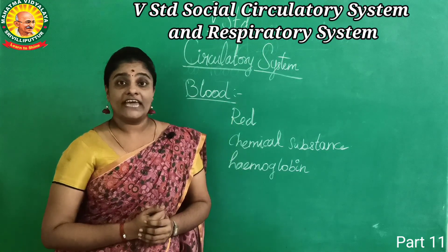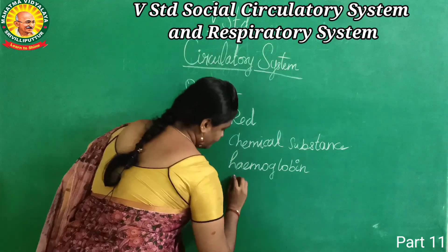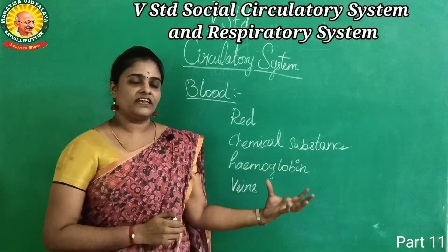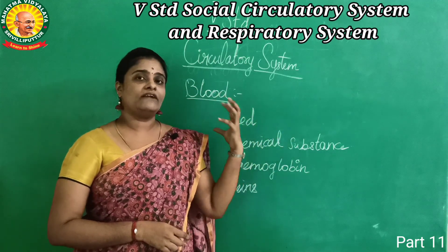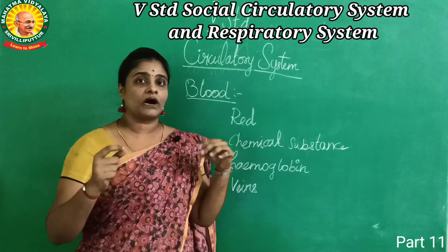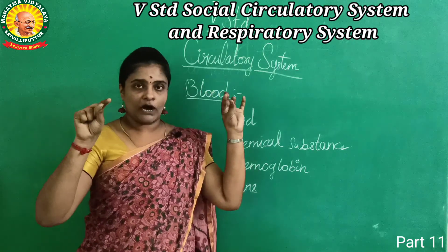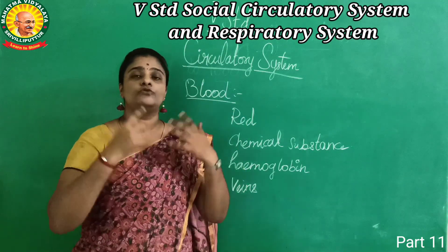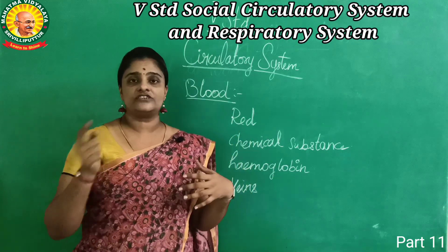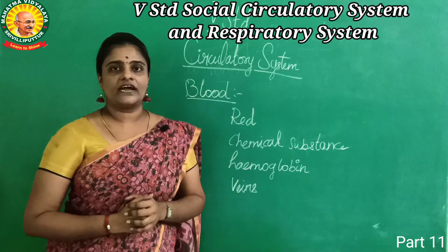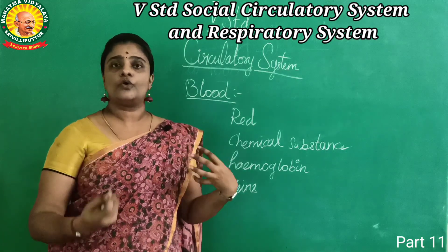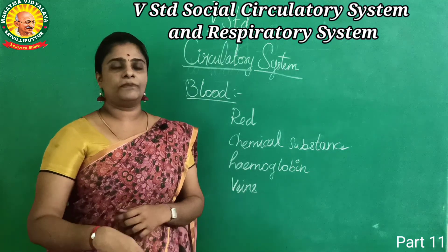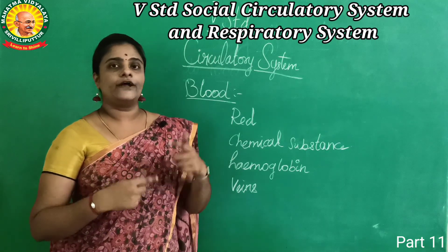What carries blood in our body? Veins — blood vessels. Blood vessels are like tubes through which blood runs throughout the body in a circulatory motion. Blood circulates everywhere, carrying oxygen and carbon dioxide in and out, so the breathing process is proper.